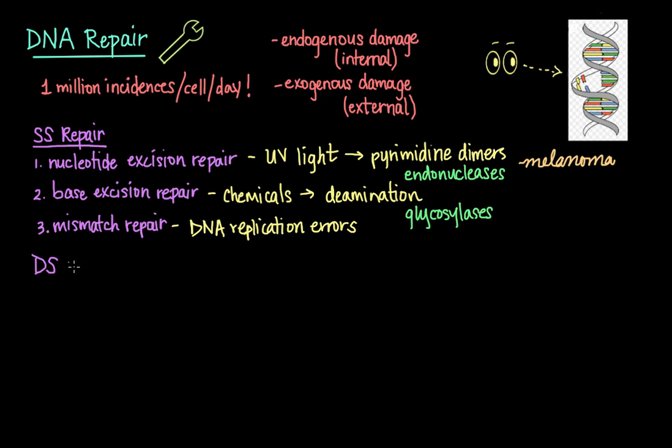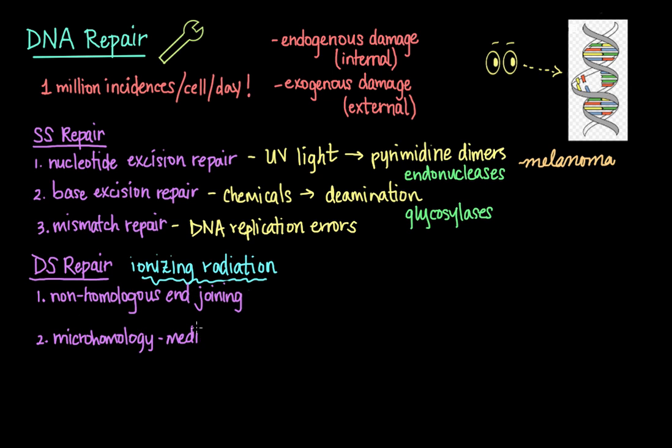Now, let's talk about double strand repair. Damage that occurs to both strands in the double helix can occur when there is exposure to ionizing radiation, such as gamma rays and x-rays. Just like there are three main mechanisms for single strand repair, there are three main mechanisms of double strand repair: non-homologous end joining, micro-homology mediated end joining, and homologous recombination.